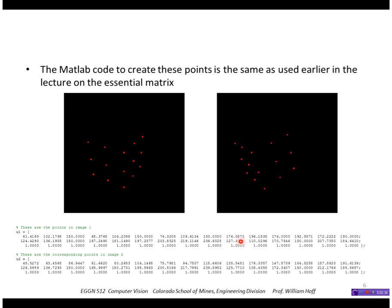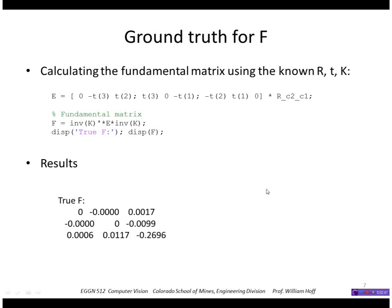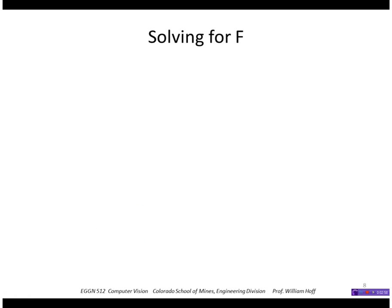The unnormalized points are shown below. We create the essential matrix as before from the translation and rotation, and the fundamental matrix now is this product here. So that gives us the true fundamental matrix as shown below.